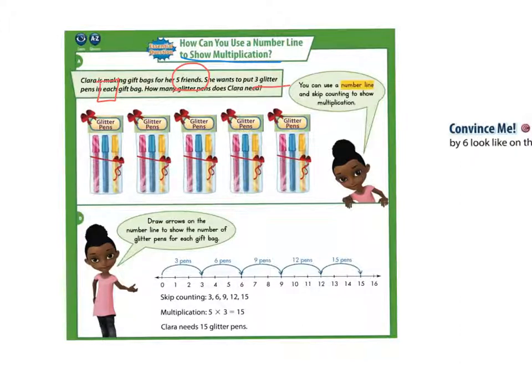We can see that she has five gift bags pictured here. If we use the number line, each gift bag is a jump with three pens. So we jump another three pens. And another, there's three friends, four friends, five friends. She needs a total of 15 pens.